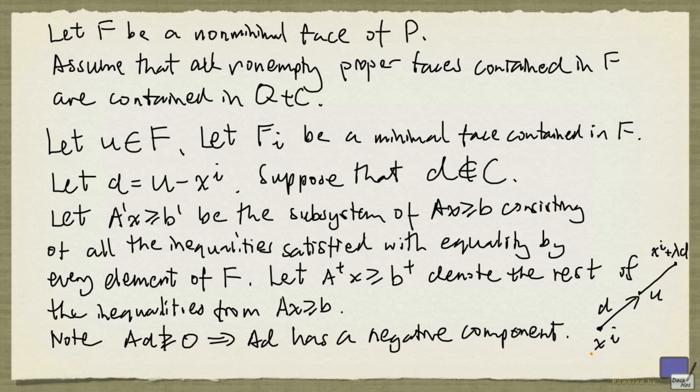Now, all the points that we travel along the way are also in F, and so this point here is going to be on a face that is properly contained in F. And by our induction hypothesis, this point must be in Q plus C. So we have Xi in Q plus C, Xi plus lambda D in Q plus C, and U is in the line segment between these two points. So U must also be in Q plus C. And that proves the theorem.